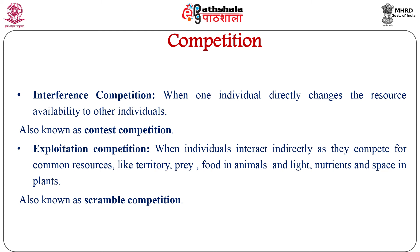Depending on the mode of resource utilization, competition can be of two types. Interference competition occurs when one individual directly changes resource availability to others; this generally happens when a resource is non-divisible and leads to competitive exclusion where one competitor wins and excludes all others. It is also known as contest competition. Exploitation competition occurs when individuals interact indirectly as they compete for common resources like territory, prey, and food in animals, or light, nutrients, and space in plants. It is also known as scramble competition.